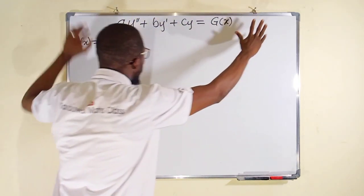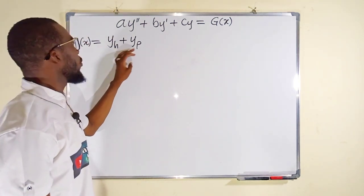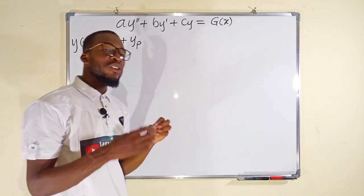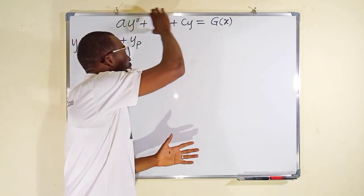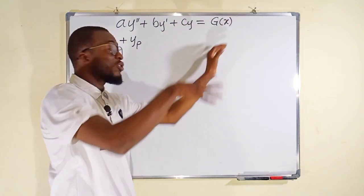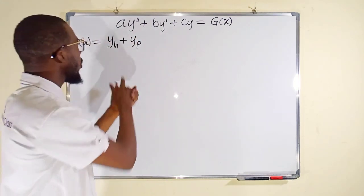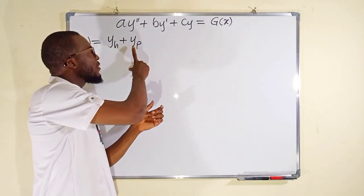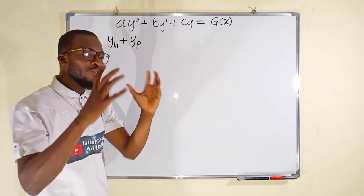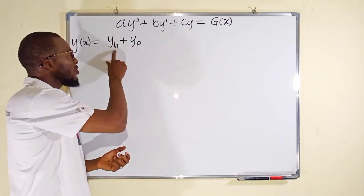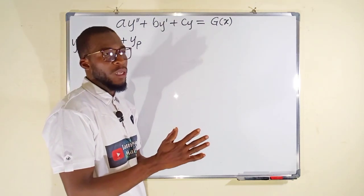To find the general solution to this problem, we are going to take y, which is a function of x, equal to y sub h plus y sub p. This y sub h is the general solution to the homogeneous differential equation — we set g of x equal to 0, solve for the homogeneous type, and keep the result aside. Then we come for the particular solution, which is obtained based on the nature of g of x. Adding the two gives us the general solution.